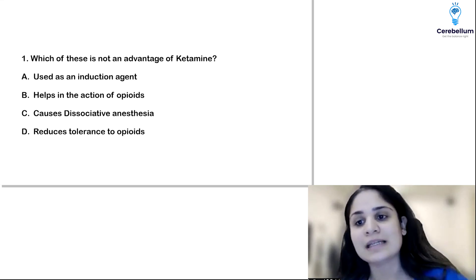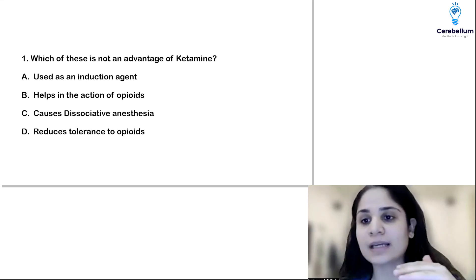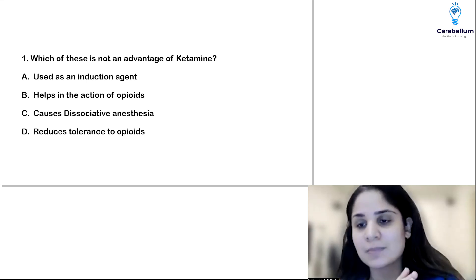As we know, ketamine is a blocker of NMDA receptors. This upregulation of NMDA receptors can be taken care of by giving something which antagonizes them, that is ketamine. In chronic pain, we do use ketamine to reduce the tolerance of opioids.